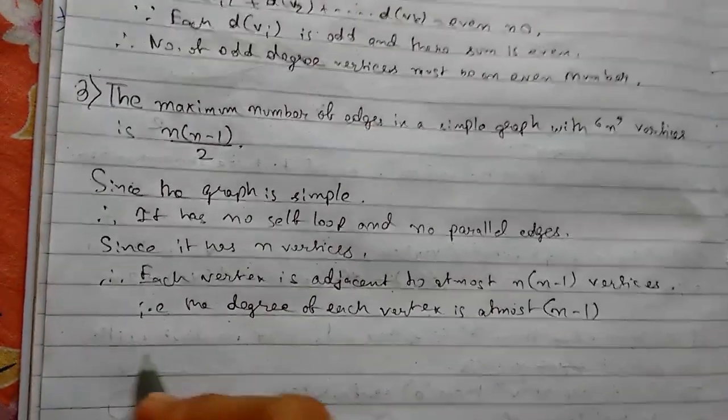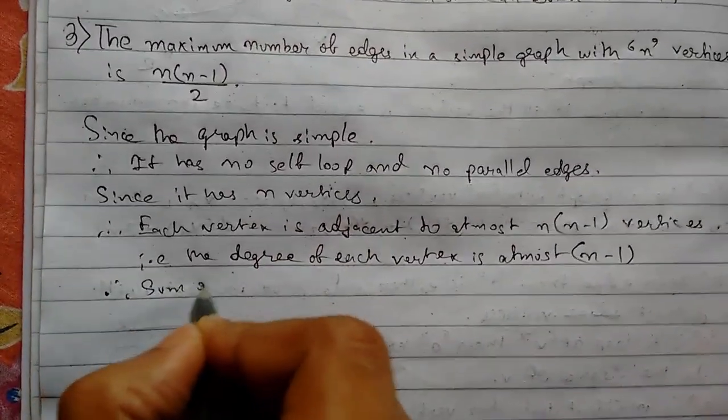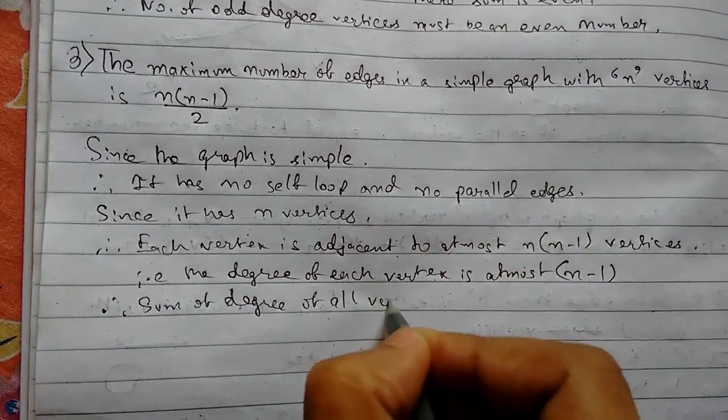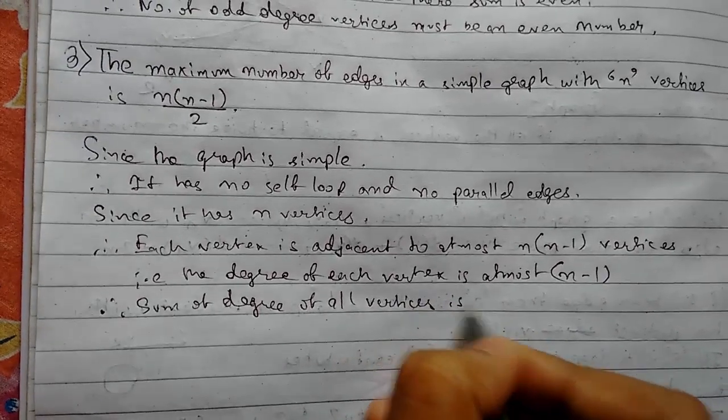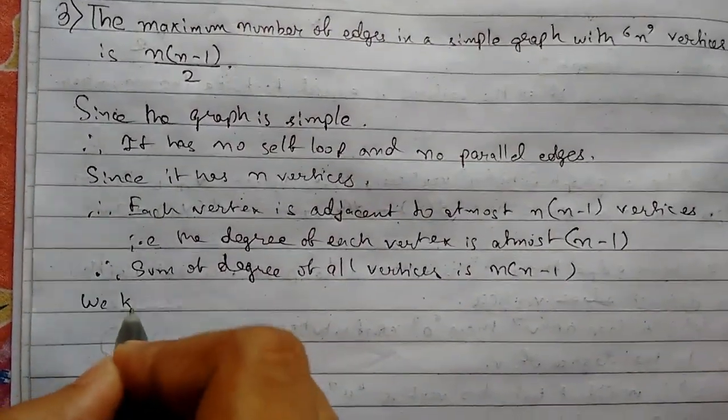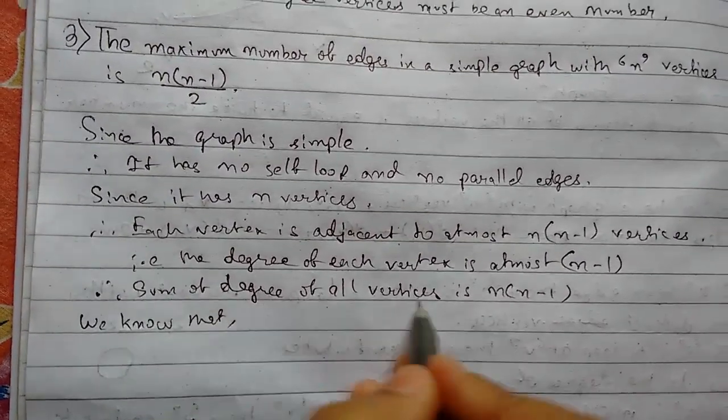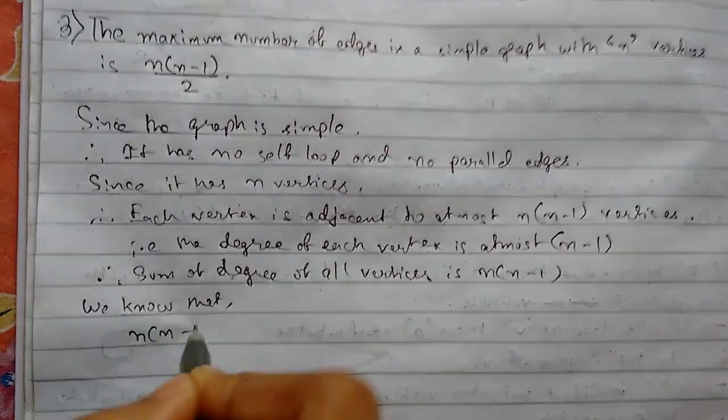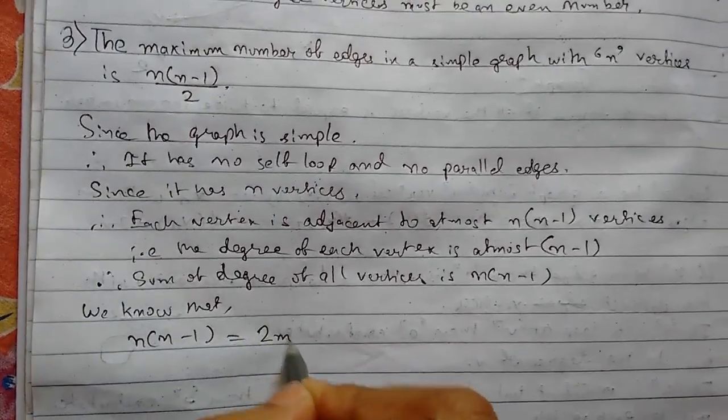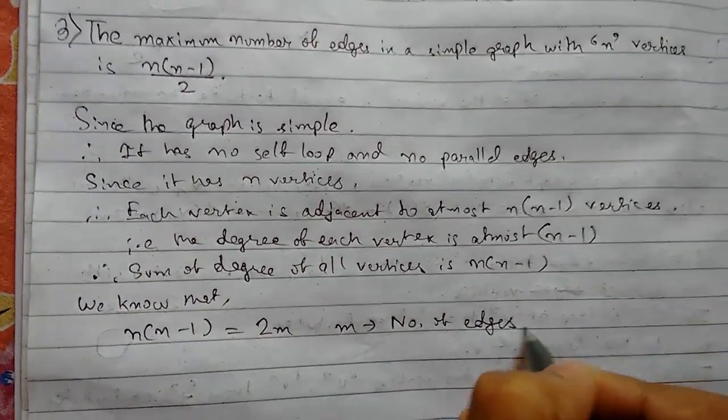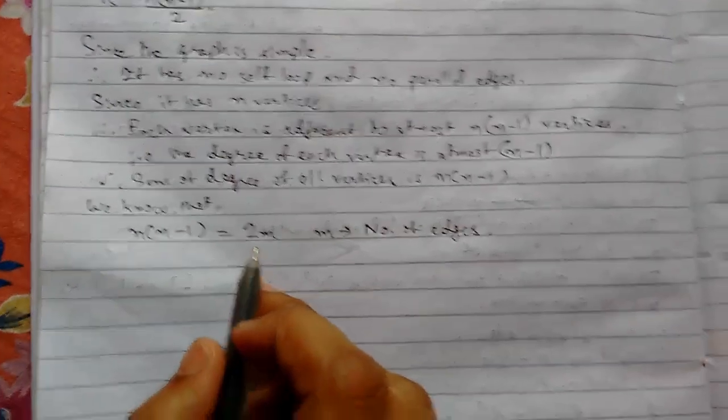Now therefore we can say that sum of degree of all vertices is n(n-1). So we know that this sum, n(n-1), equals 2m where m is the number of edges. This is our theorem we have done.